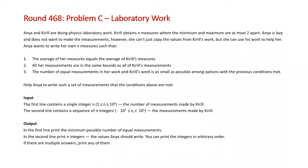The problem states Anya and Kirill are doing physics laboratory work. Kirill obtains N measures where the minimum and maximum are at most two apart. Anya is lazy and does not want to make the measurements herself, however she can't just copy the values from Kirill's work. Anya wants to write her own measurements such that three conditions are met: one, the average of her measures equals the average of Kirill's; two, all her measures are in the same bounds; and three, the number of equal measurements in her work and Kirill's work is as small as possible.